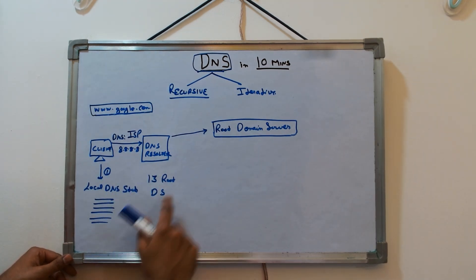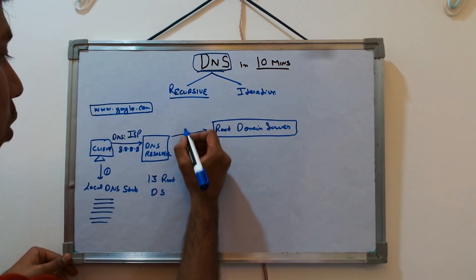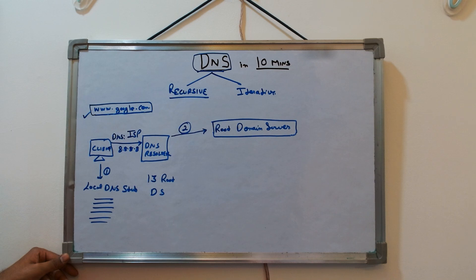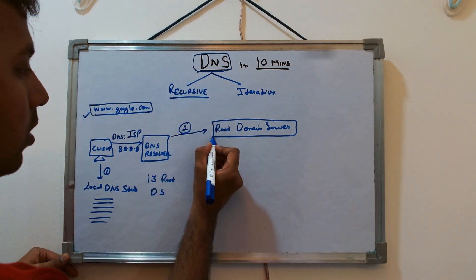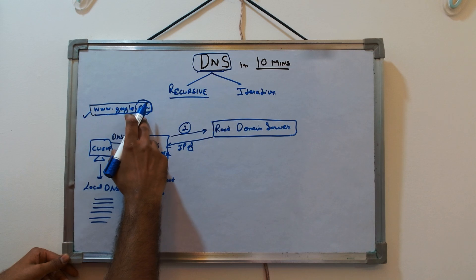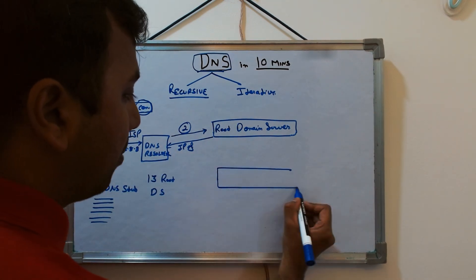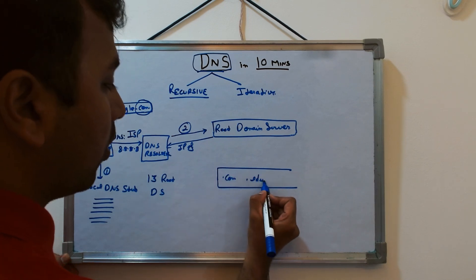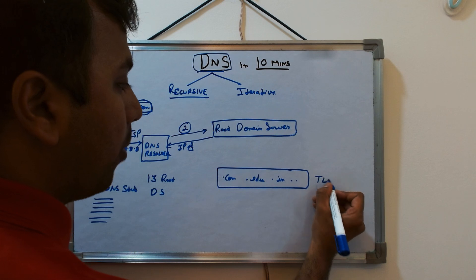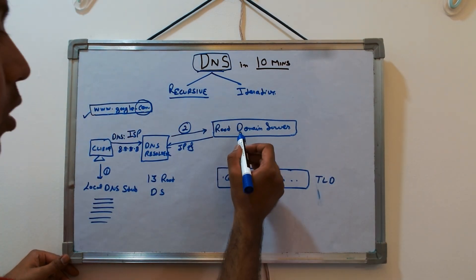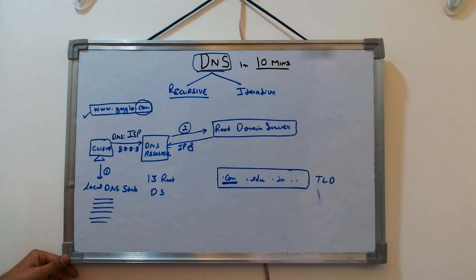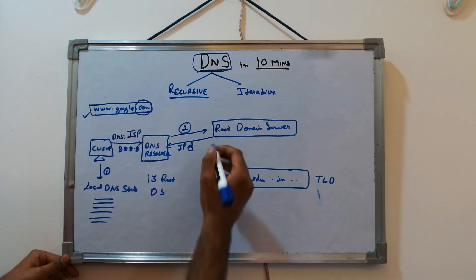The DNS resolver picks the root domain server nearest to the client. The root domain server checks its cache for the IP of www.google.com. If found, it returns. If not, it returns the IP of the top level domain server — in this case, the dot com TLD server — because there are multiple TLDs like dot com, dot edu, dot in.